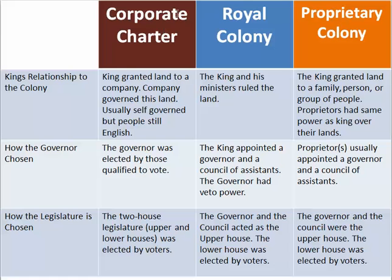Looking at the different types of charters: with a corporate charter, the king granted land to a company or corporation, and that company self-governed the land, while the people still had English rights. The entire colony and all its laws were governed by this corporation. Massachusetts Bay Colony argued that since they had a corporate charter, they didn't have to abide by the king's or Parliament's laws. With a royal charter, by contrast, the king and his ministers ruled the land within the colony, and the colony had to abide by all laws — especially the Navigation Acts.